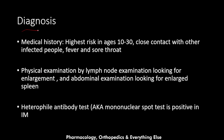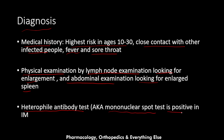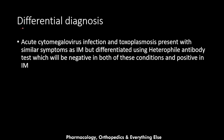Diagnosis of mono is through medical history — highest risk in ages 10 to 30, close contact with infected people, and presentation with fever and sore throat. Physical examination includes lymph node examination for enlargement and abdominal examination for an enlarged spleen. The heterophile antibody test, also known as the monospot test, is positive in infectious mononucleosis.